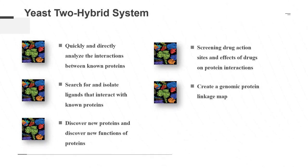The yeast-2 hybrid system, also known as the protein trap capture system, was created by Fields and Song based on the characteristics of eukaryotic transcription regulation. The yeast-2 hybrid system can quickly and directly analyze the interactions between known proteins, and find and isolate ligands that interact with known proteins. This method is widely used to study antigen-antibody interactions, discover new proteins and new functions of proteins, screen drug interaction sites and effects of drugs on protein interactions, and establish genomic protein linkage maps.